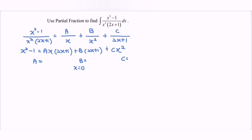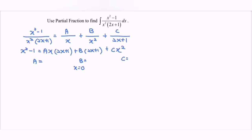Next, to find B, substitute x equals 0. On the left-hand side we will have negative 1. Then substituting 0 we obtain 0 for A and C terms, so we can eliminate A and C. Therefore B equals negative 1.